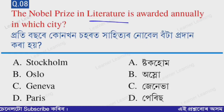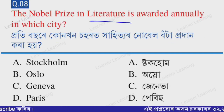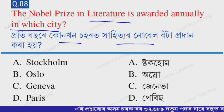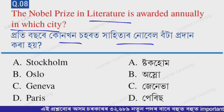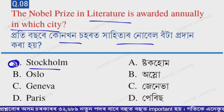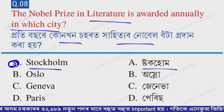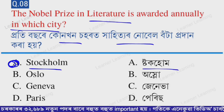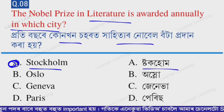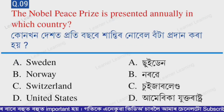Next question: The Nobel Prize in Literature is awarded annually in which city? The correct option is option A — Stockholm. The Nobel Prize in Literature is awarded annually in Stockholm.